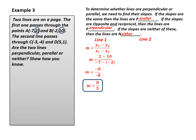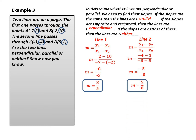Now I'm going to do line CD. Again, it's coordinates, so I use the coordinate formula. I've decided to use point C as my x1, y1. So y1 minus y2 is negative 4 minus 1, and x1 minus x2 is negative 3 minus 5. Working this out: negative 4 minus 1 is negative 5, and negative 3 minus 5 is negative 8. A negative divided by a negative simplifies to positive, so the slope of line CD is 5 over 8.